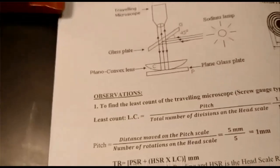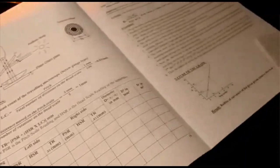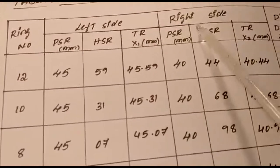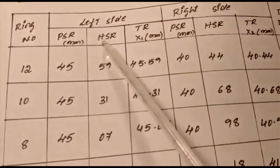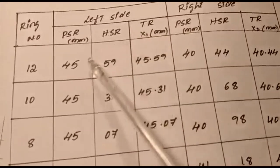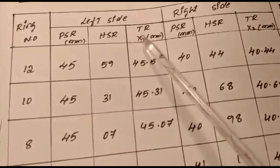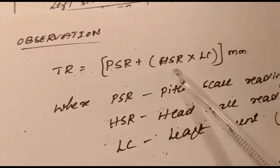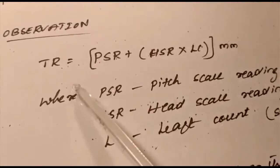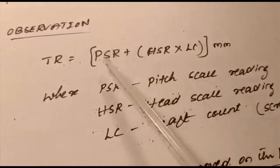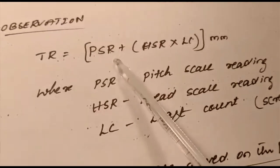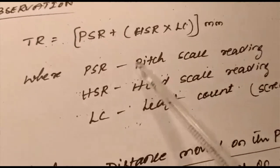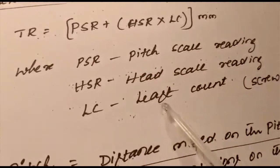In the tabular column, we have the ring number, left side readings, right side readings, pitch scale, head scale, and total reading. To find the total reading, the formula is: TR = PSR + (HSR × LC), in millimeters. Here PSR is the pitch scale reading, HSR is the head scale reading, and LC is the least count.